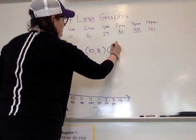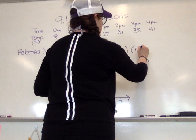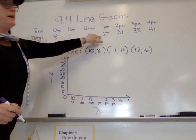So we have 10 comma 8, we have 11 comma 11, we have 12 comma 16. Let me make sure we can see all the way down. We have 1 comma 27.